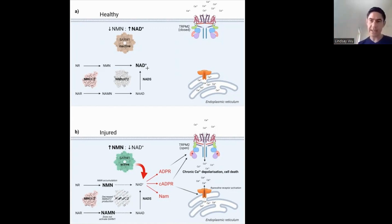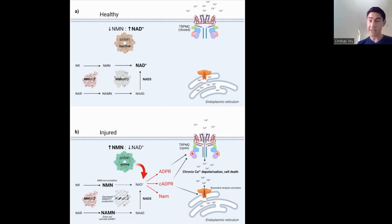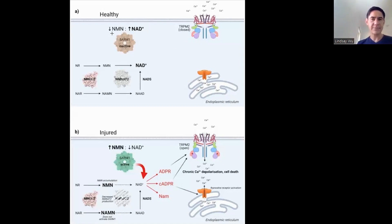Under healthy circumstances, NMN is immediately converted into NAD — no problem, you don't accumulate NMN, and you have lots of NAD. However, when there is axonal injury — which can be physical injury to the axons — this enzyme NMNAT2 becomes highly destabilized and degrades. You end up with very low levels of its activity and begin accumulating NMN, which then triggers the SARM1 pathway.